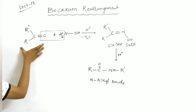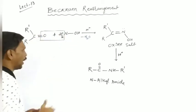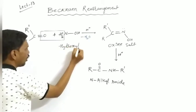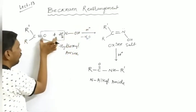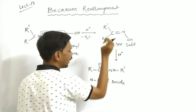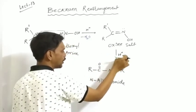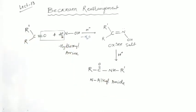To summarize: a carbonyl compound (almost always a ketone) reacts with hydroxylamine in the presence of acid. A water molecule is eliminated to give an oxime salt. Again, the oxime salt undergoes rearrangement in the presence of H+ to give N-alkyl amide — this is called Beckmann rearrangement.